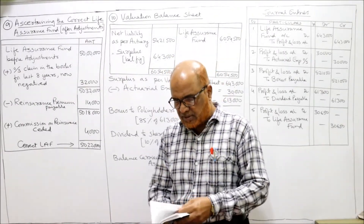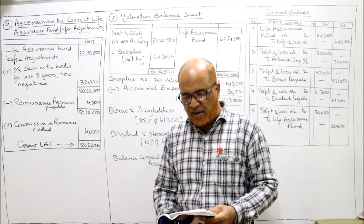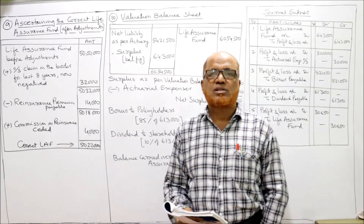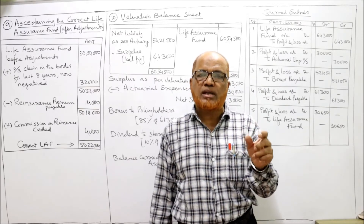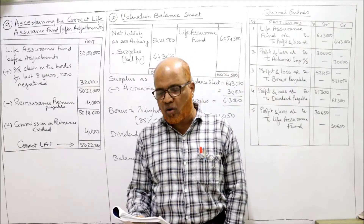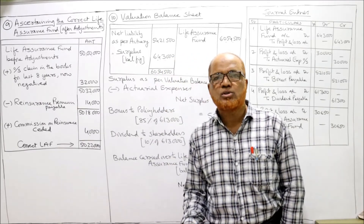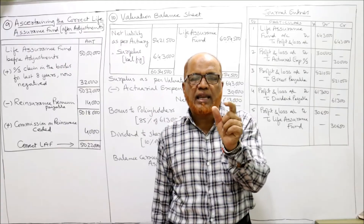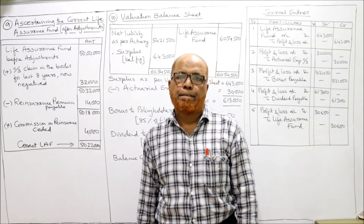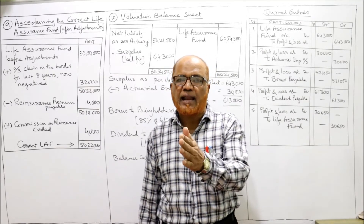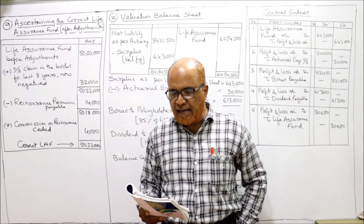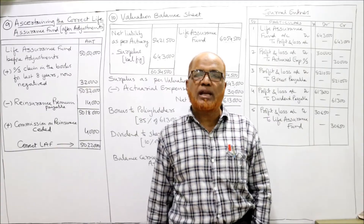Now see the tenth problem — this is the last short problem. The life assurance fund of Sada Bahar Assurance Company Limited as on 31st March 2004 amounted to ₹60,64,500. The company's actuary estimated the net liability in respect of all contracts to be ₹54,21,500. Whenever we are given the life assurance fund and net liability as per the actuary, that means we have to prepare a valuation balance sheet.